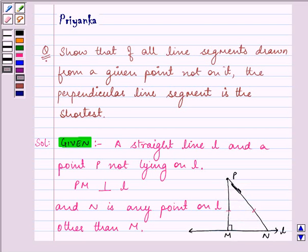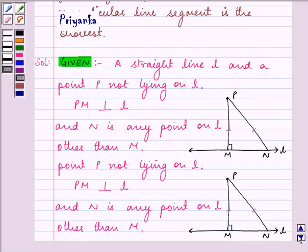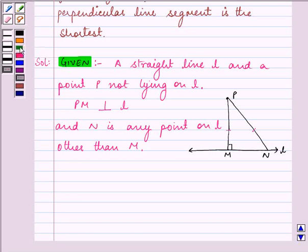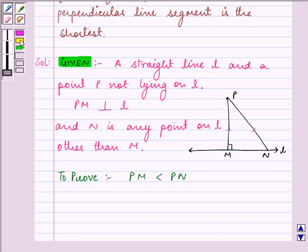We need to show that the perpendicular line is the shortest. That means PM is smaller than PN. So we need to prove that PM is smaller than PN. Let us start with our proof.